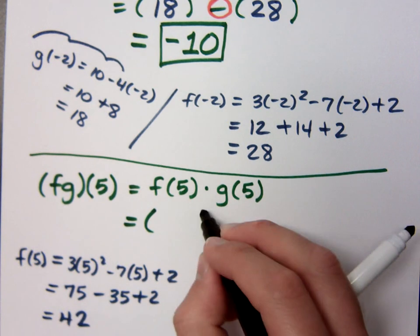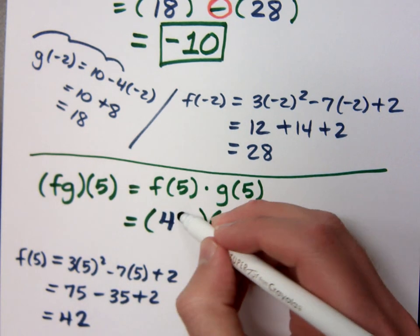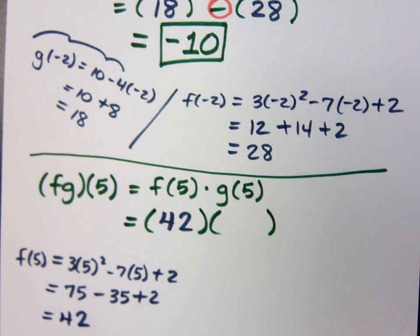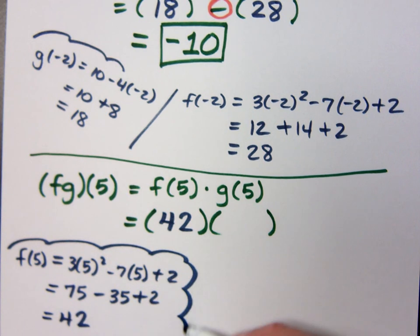So I know that up here I get 42 for f of 5.